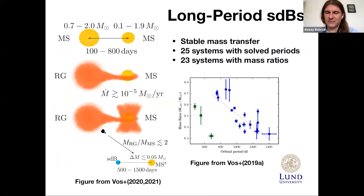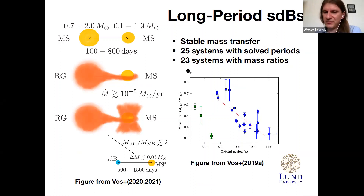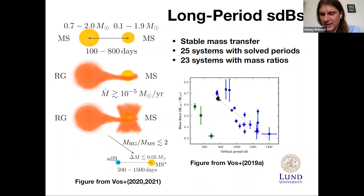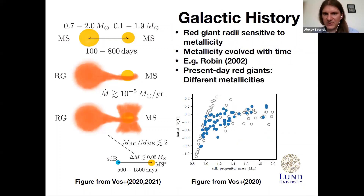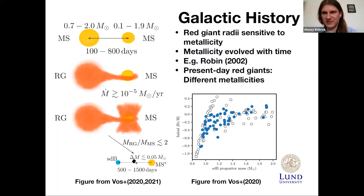Long-period subdwarf B-stars result from stable mass transfer — the branch when the red giant mass did not much exceed the companion mass. Currently we observe about 25 long-period subdwarf B-binaries with main sequence companions with measured orbital periods and mass ratios. Here is a diagram of mass ratios versus periods, and until recently the exact location of observed systems on these diagrams was not well explained.